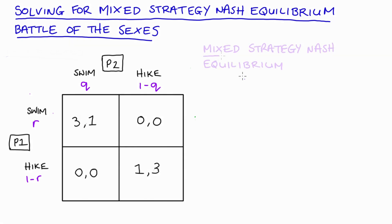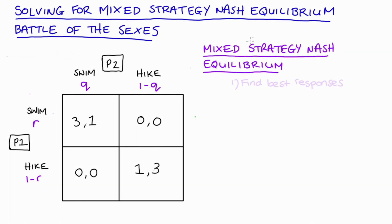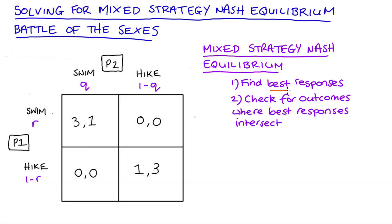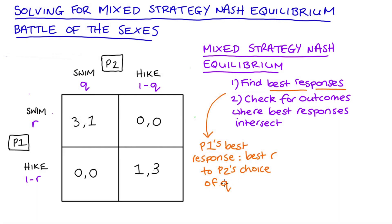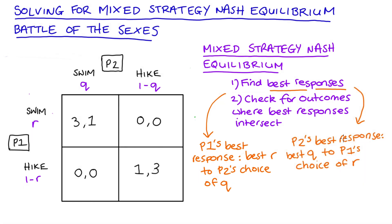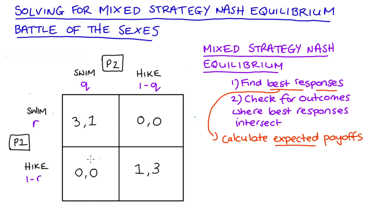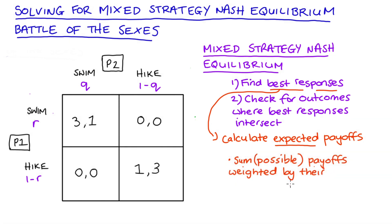When we find our mixed strategy Nash equilibrium, we think about the best responses of each player to the strategies of the other, then check if there are any outcomes where the best responses intersect. Player one's best response is their best choice of r to the various values of q that player two could play, and player two's best response is their best choice of q to the various values of r that player one could play. Because we're dealing with probabilities, we need to calculate expected payoffs — our regular payoffs weighted by the probability of each outcome, then summed together.